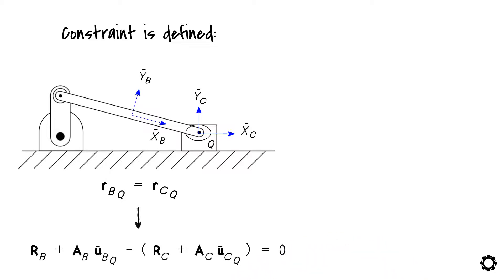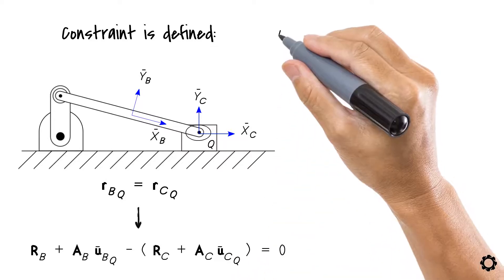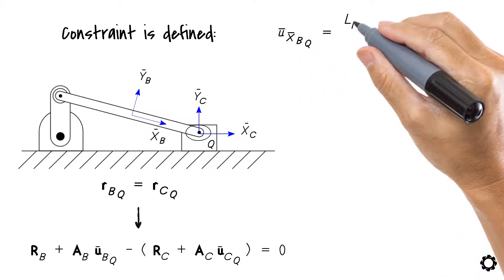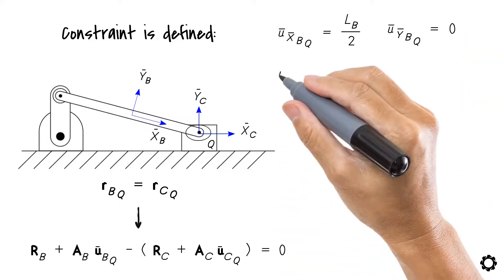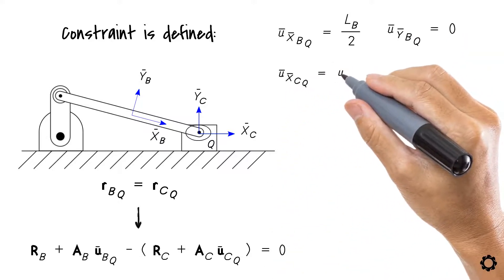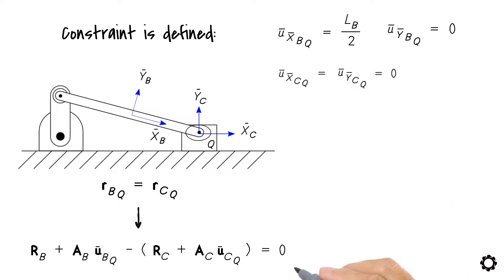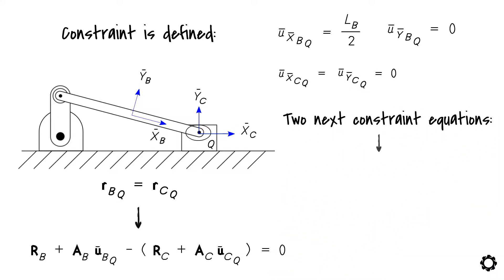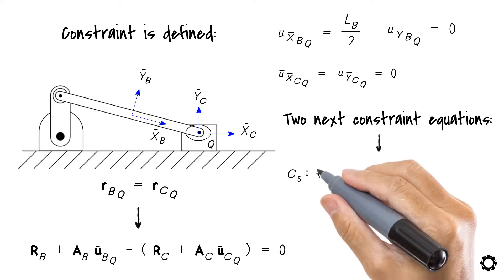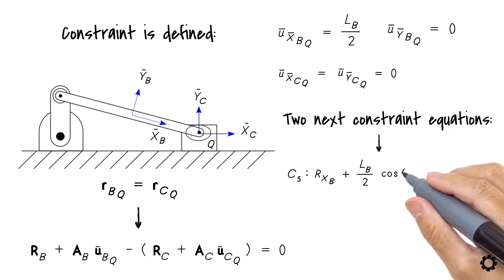Considering in this case that the following terms are U-bar X-bar BQ equals LB by 2 and U-bar Y-bar BQ equals zero, our two next constraint equations become C5 is RxB plus LB by 2 cos theta B minus RxC equals zero.